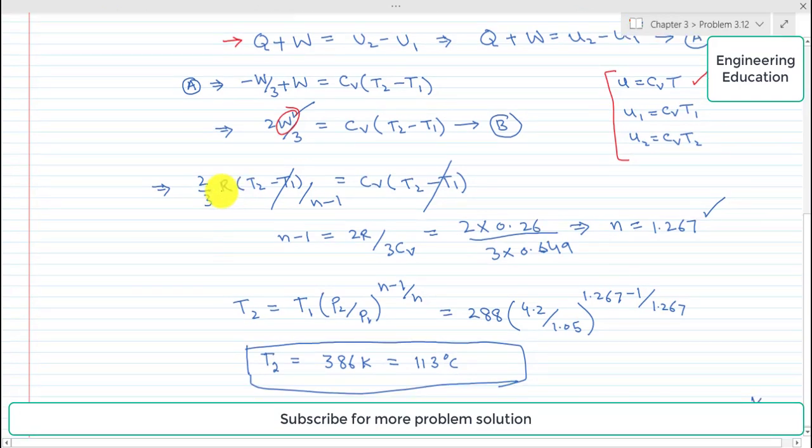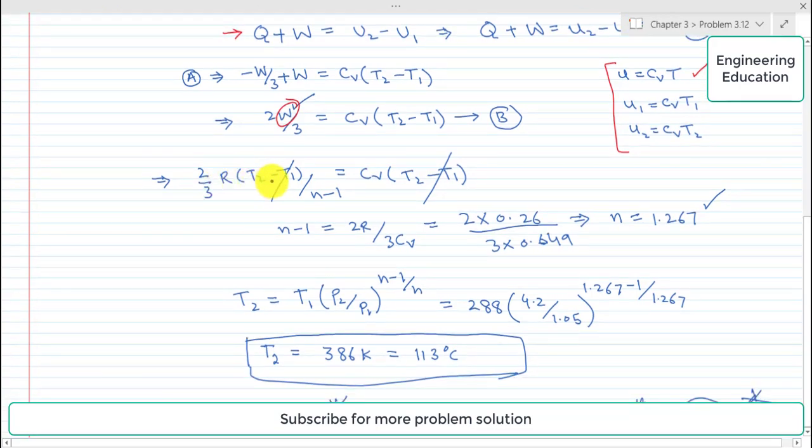T2 minus T1 is same on both sides, left hand side and right hand side, so they will cancel each other.